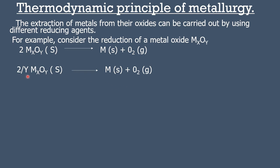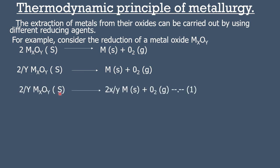Now, we calculate the number of metal oxides on the left-hand side. That is, (2/Y) × X, which equals 2X/Y. So we multiply 2X/Y on the right-hand side. The number of metal atoms on the left-hand side as well as the right-hand side is now equal.